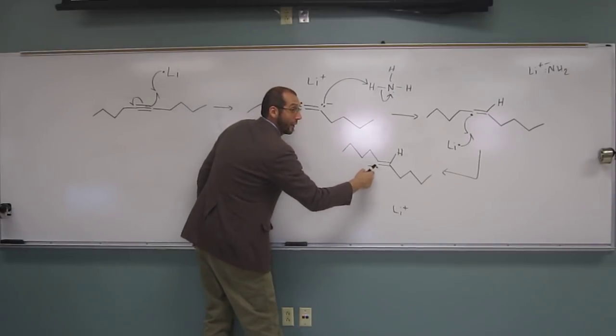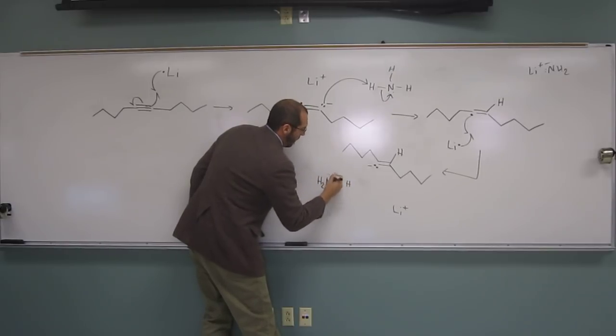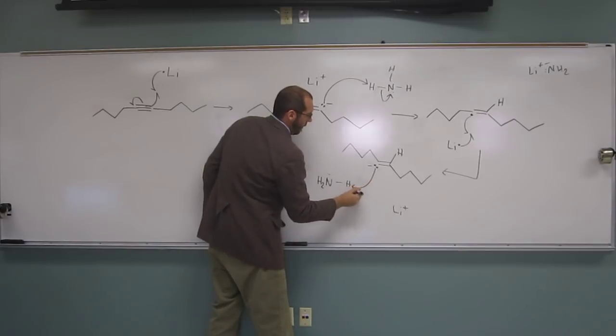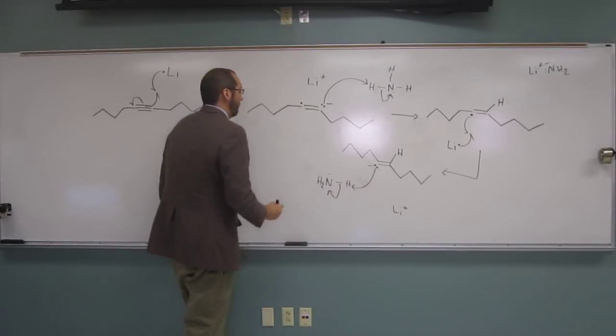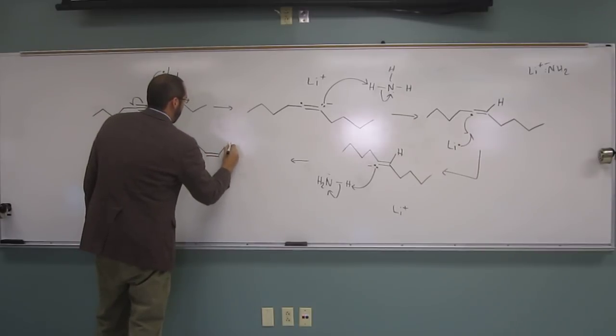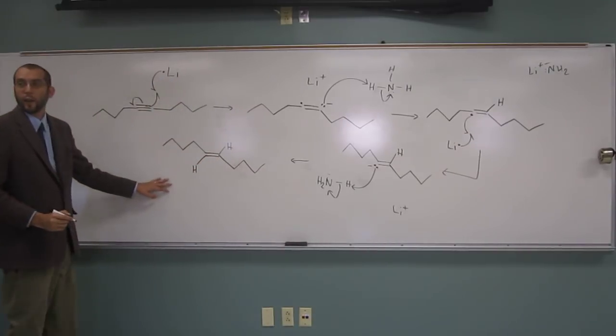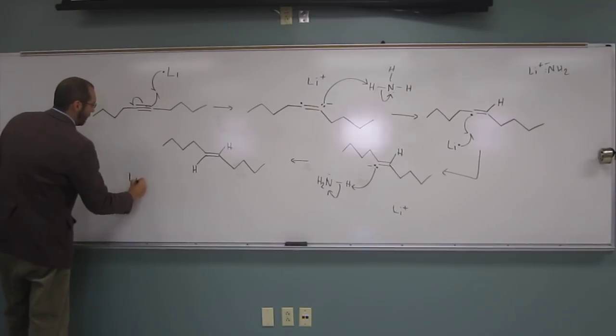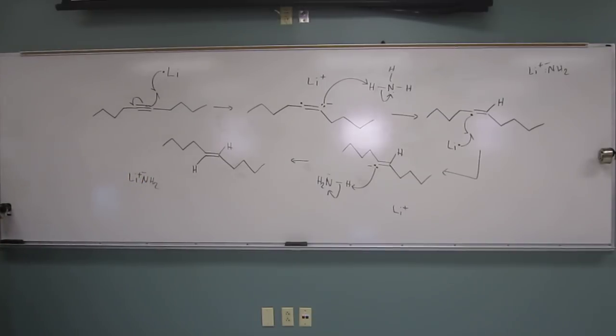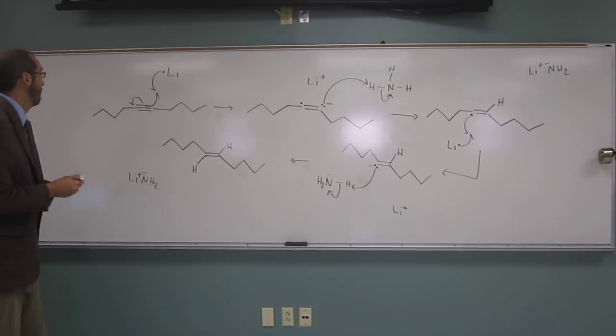Okay, and now what's going to happen? The other acts as a strong base, like we said before. Now you've got the polar arrow, polar arrows, and we're going to make the trans-alkene. And then, if you want to, the other lithium cation. So, this is the product.